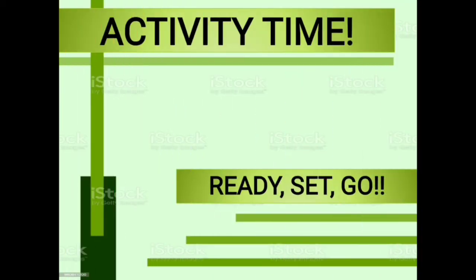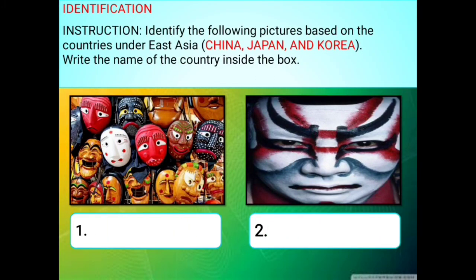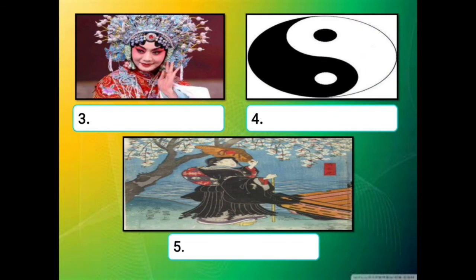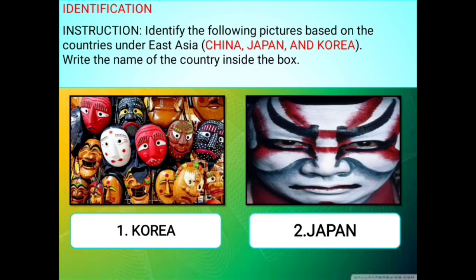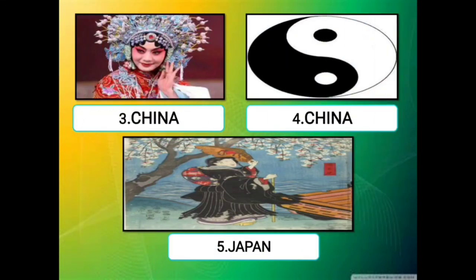It's activity time. Identify the following pictures based on the countries under East Asia. The answer could either be China, Japan, or Korea. Write the name of the country inside the box. Now for the answers: Number 1 is Korea, Number 2 is Japan, Number 3 is China, Number 4 is China, and Number 5 is Japan. Write the score over the total number of items. Very good and job well done.